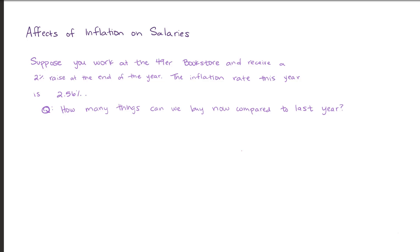Suppose that you work at the 49er bookstore and you receive a 2% raise at the end of the year, but inflation rate for this year is 2.56%. How many more items can you buy compared to last year or how many less items can you buy or can you buy the same amount? Let's think about this. We don't have to do any math here because what we know is we had our salary and we received a 2% increase.